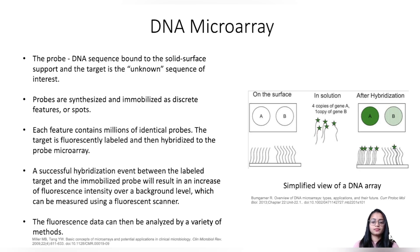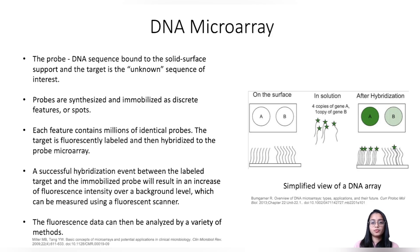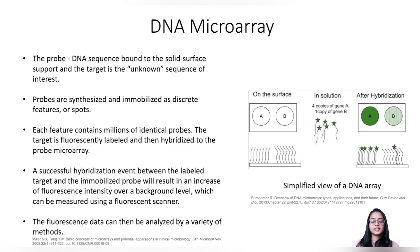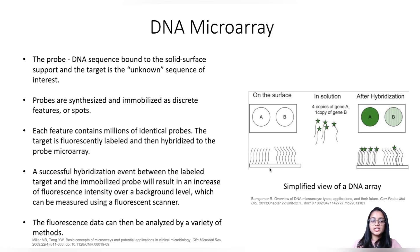Microarray can simply be defined as a collection of microscopic features which can be bound or probed with a target molecule, and when bound they generate a signal that can be quantified. There are various types of microarrays distinguished by the nature of the probe, the type of solid support used, and the method used to quantify the signal. In a DNA microarray, the probe is a DNA sequence bound to a solid surface, synthesized and immobilized as discrete features or spots, with millions of identical probes at each feature, and they are allowed to hybridize with fluorescently labeled target sequences.